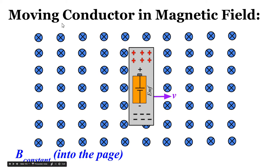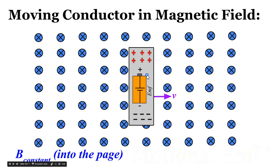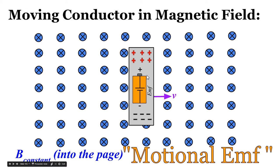We've discussed before that when we have a moving conductor in a magnetic field of constant strength, the magnetic forces inside of this conductor moving to the right, where the magnetic field is pointed into the page, forces the free-moving electrons down to the bottom of the conductor, which exposes positive charges near the top, and it creates a potential difference or an electromotive force. This moving conductor basically acts like a battery. We call this motional EMF because the motion of the conductor creates an electromotive force, acting like an ideal battery.